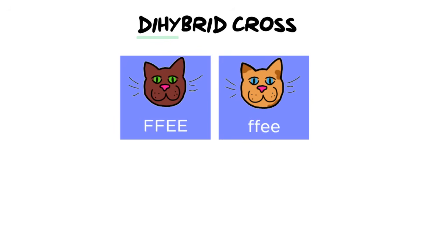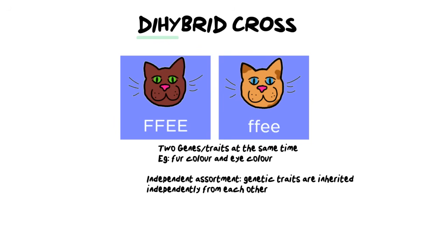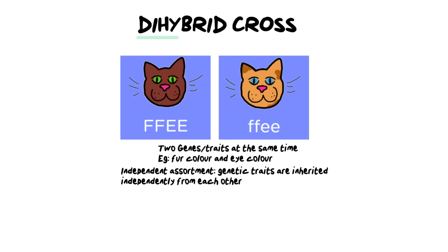For example, if we look at my two cats in this picture, we are going to do two traits in one genetic cross. In this example, we've got two genes or two traits at the same time, and the example being fur color and eye color. Now there is a law that governs dihybrid crosses, and that is the law from Mendel, which is the independent assortment law.